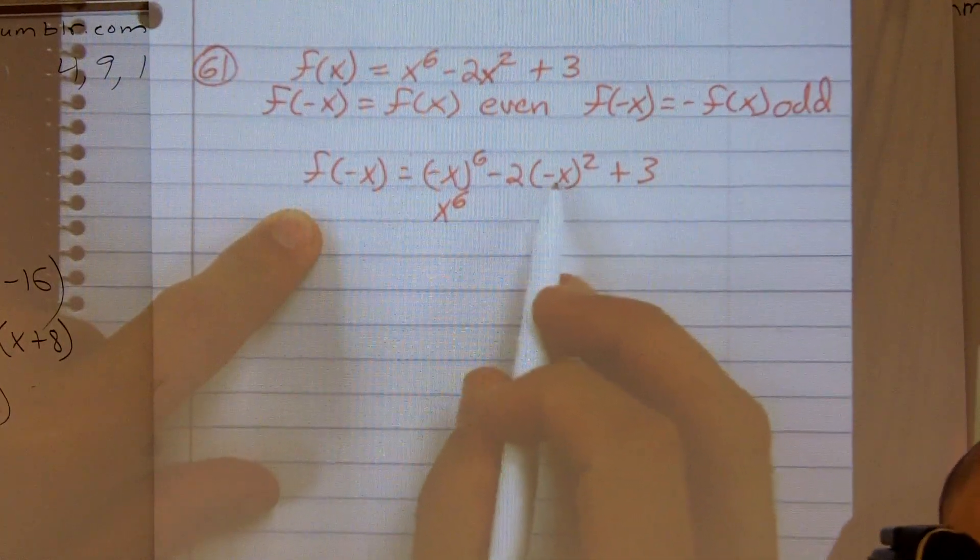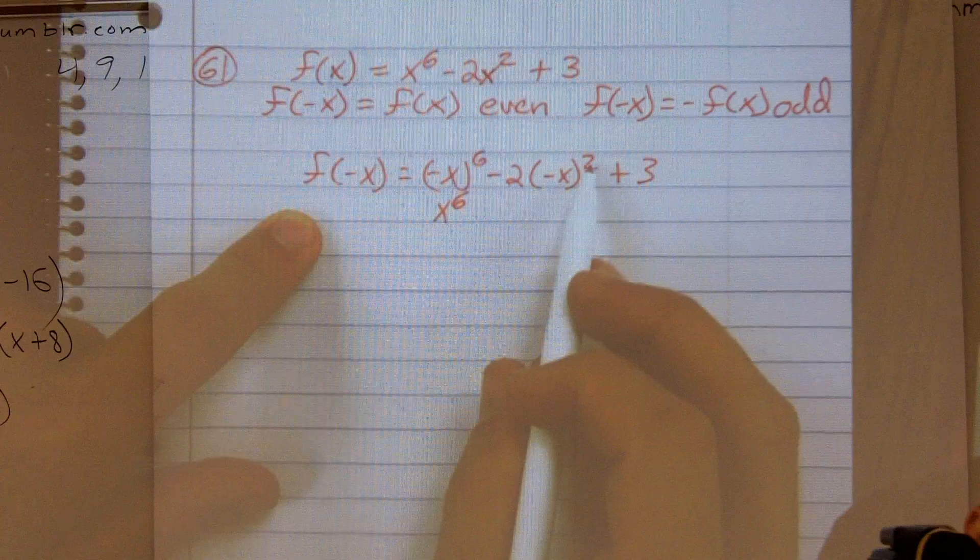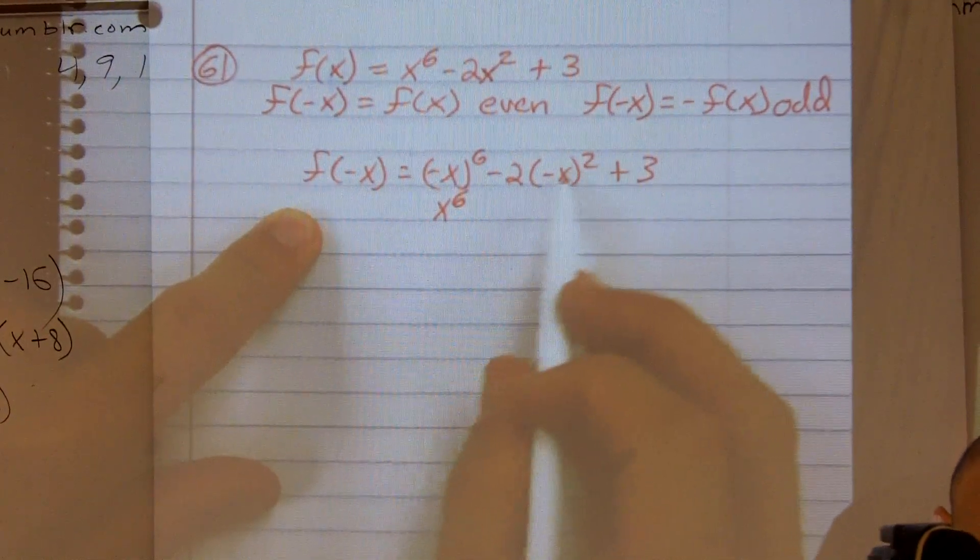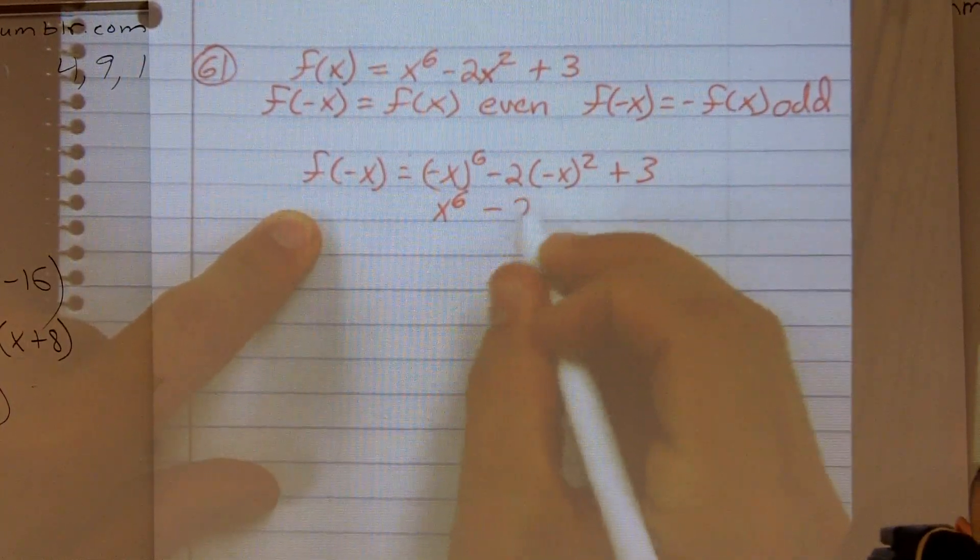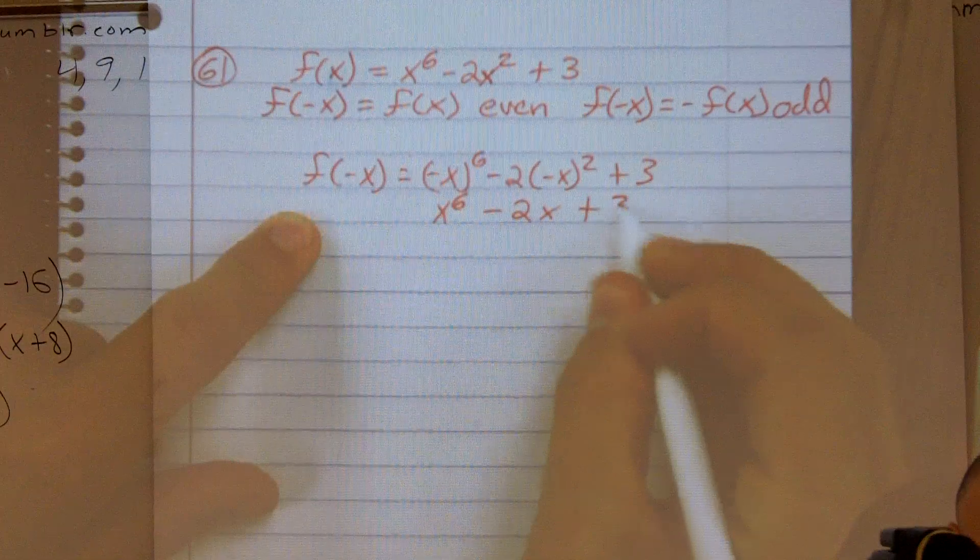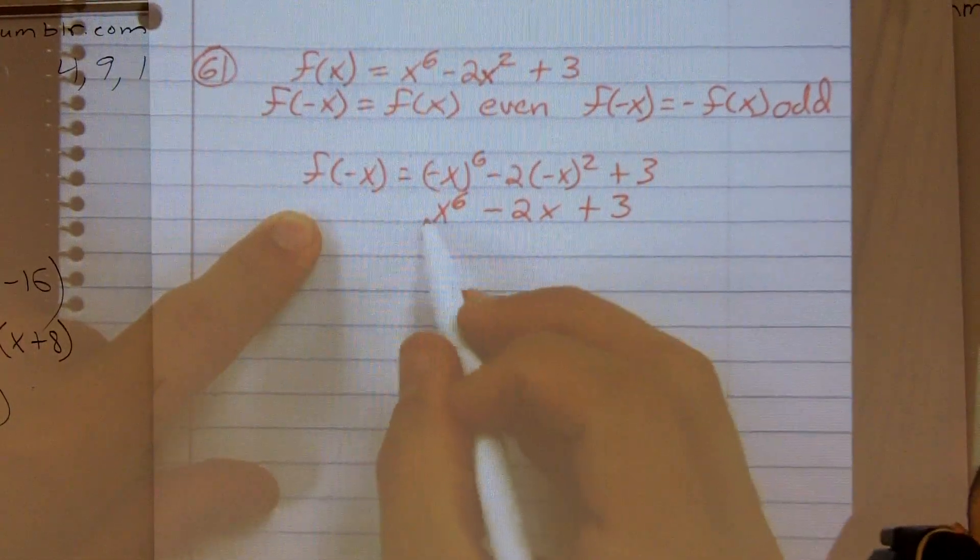Negative x squared, again, to an even power. That's going to be positive. So x squared times negative 2. 3 doesn't change. So then I look at this.